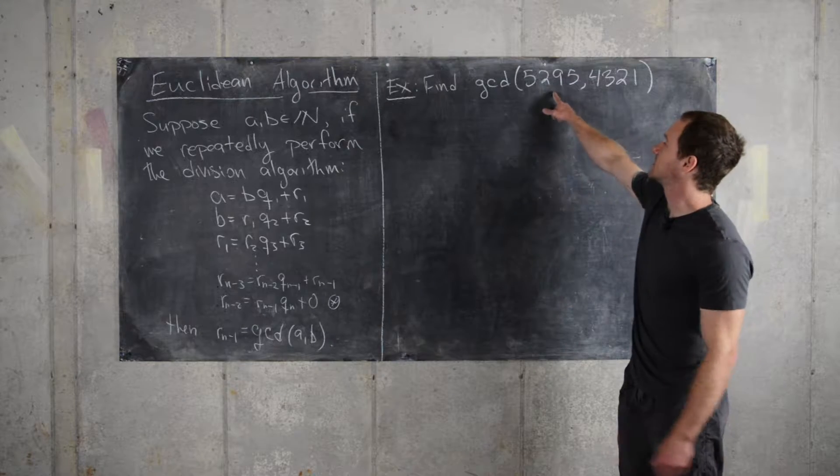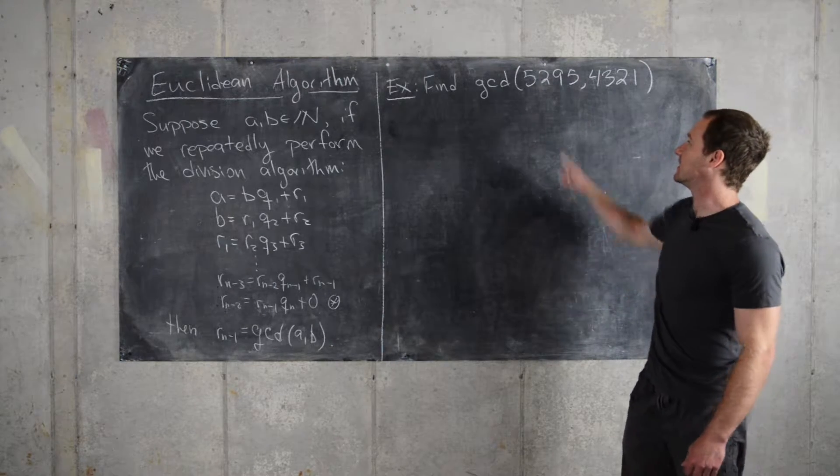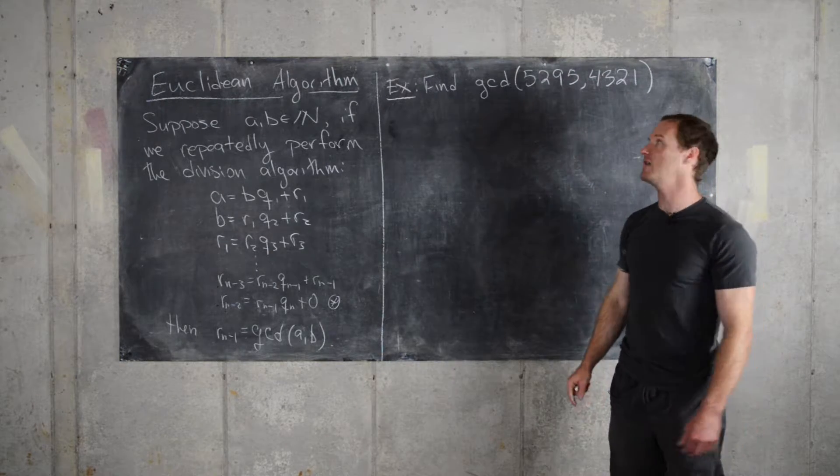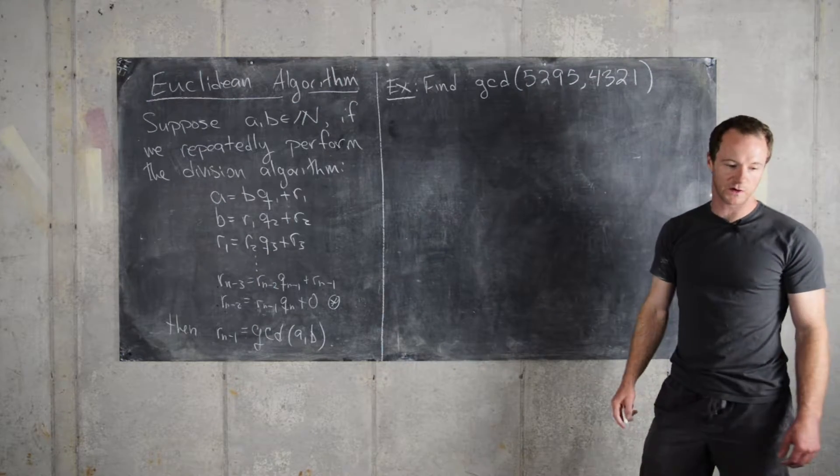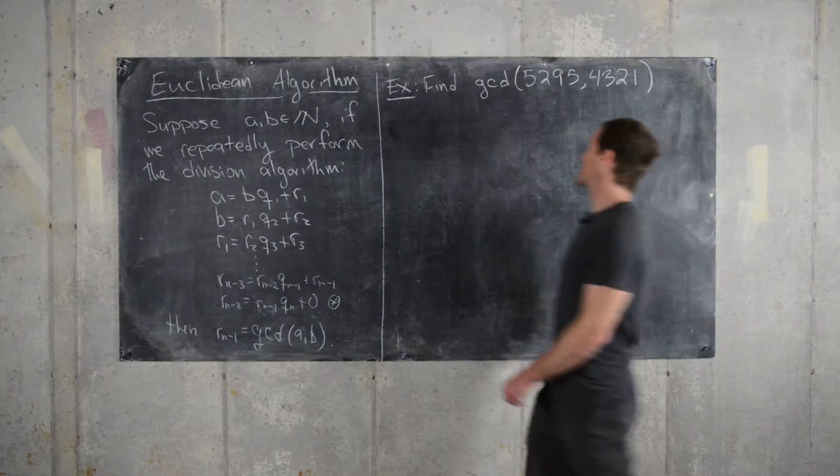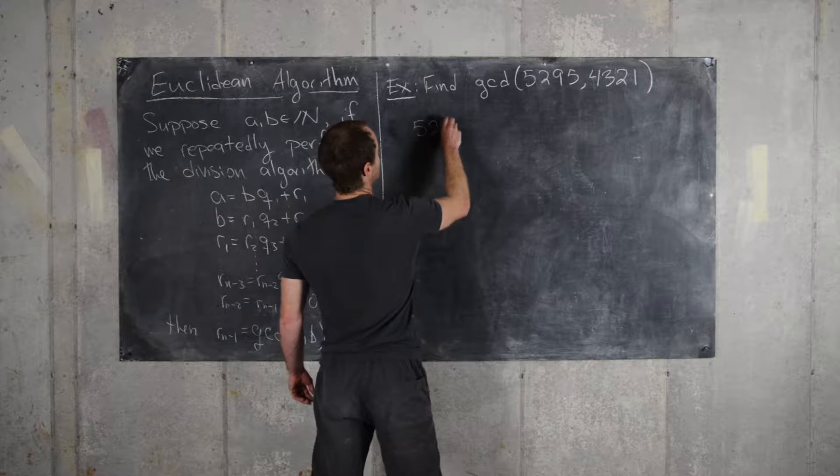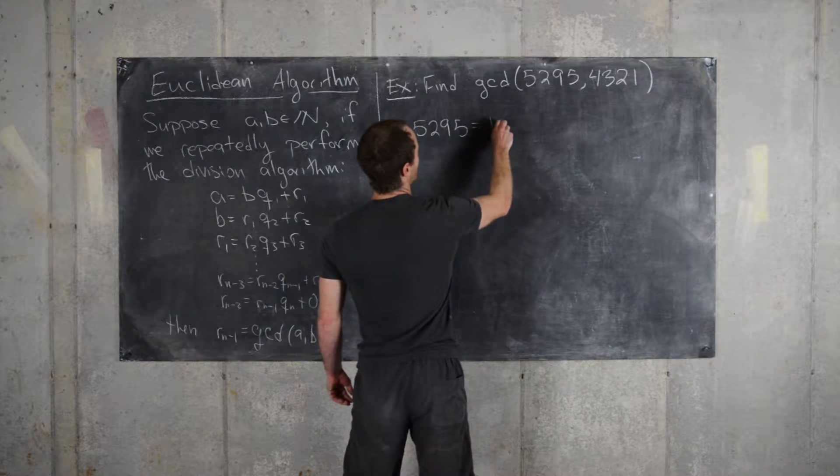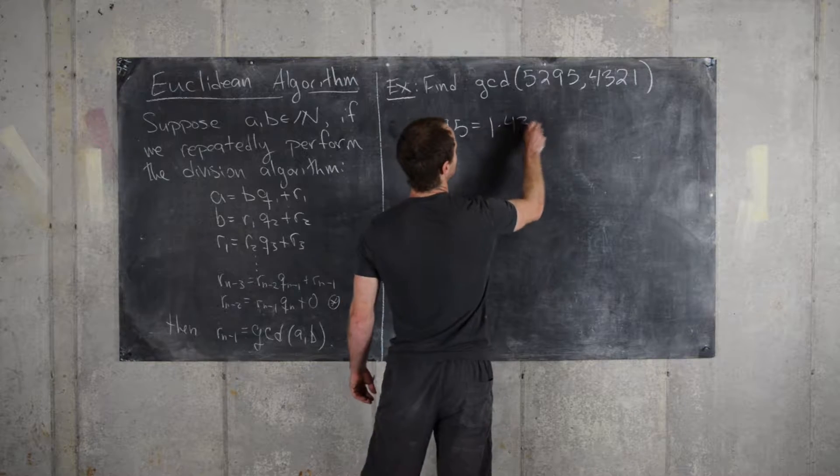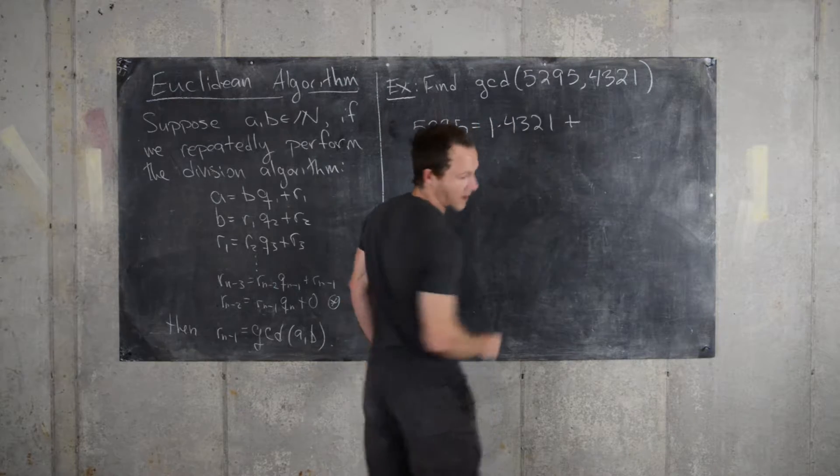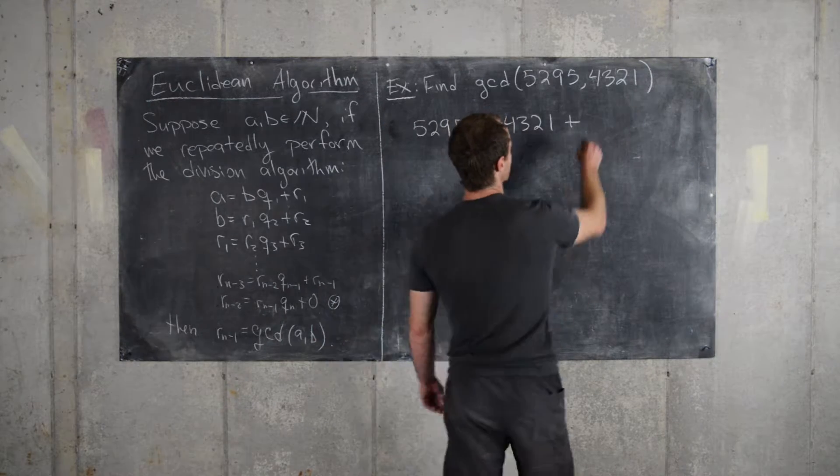So let's consider these two numbers, the GCD of 5,295 and 4,321. And so if we get started, we'll notice that 5,295 is equal to 1 times 4,321 plus 974.